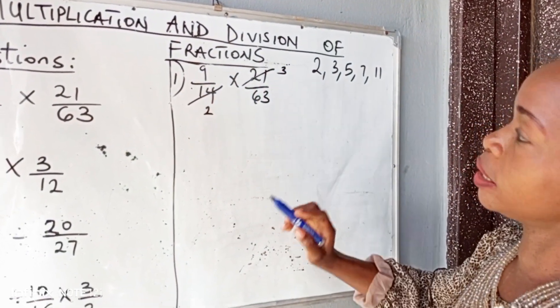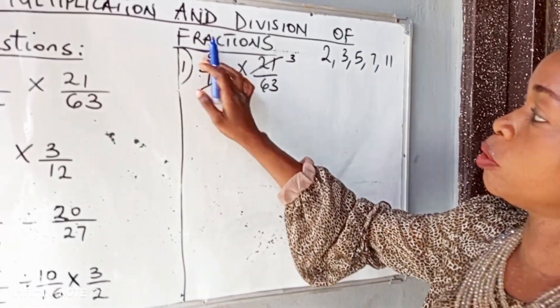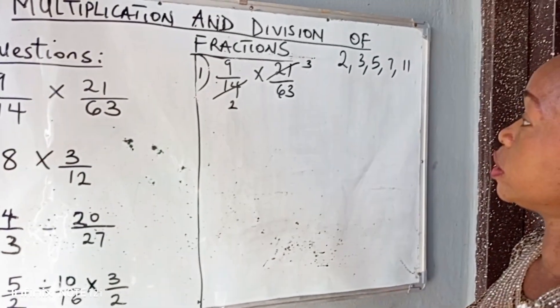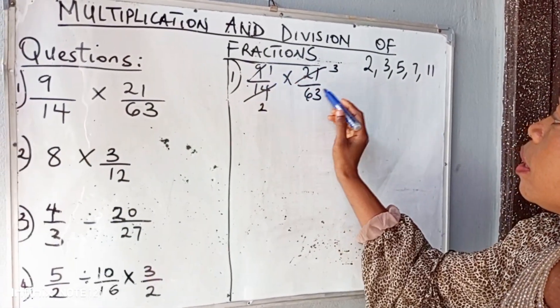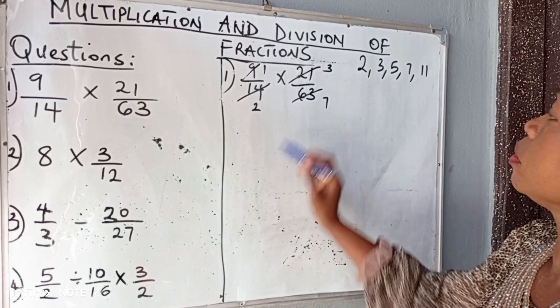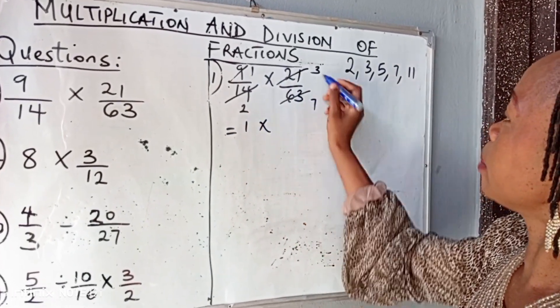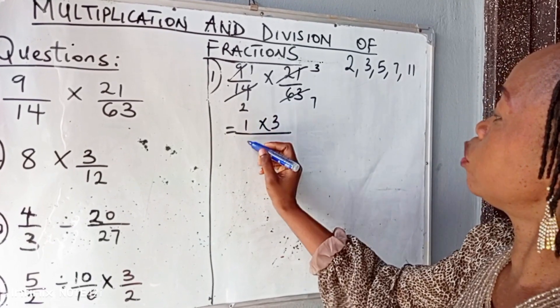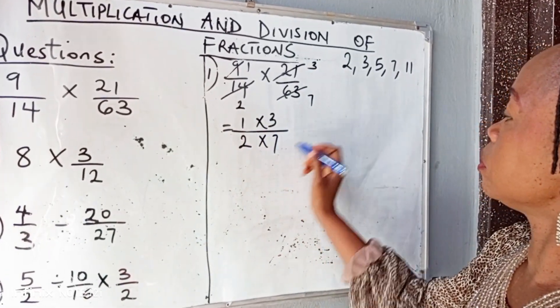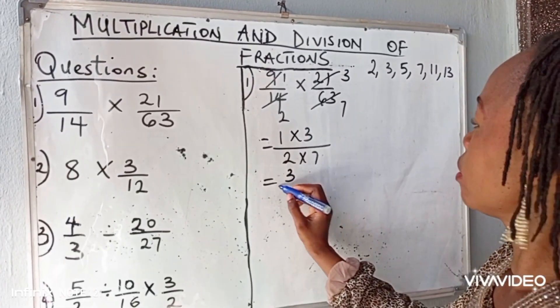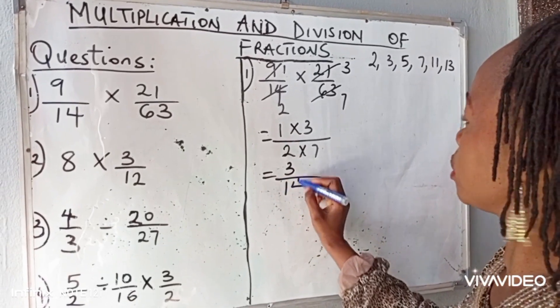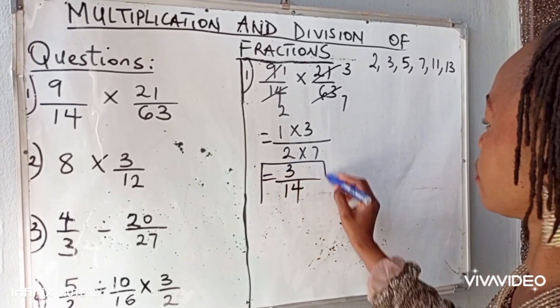9 and 63. Yes, 63 is on the multiplication table of 9. 9 times 7 will give us 63. So 9 here, 1. 9 in 63, 7. Equal to 1 times 3 over 2 times 7. 3 all over 14. We have our final answer.